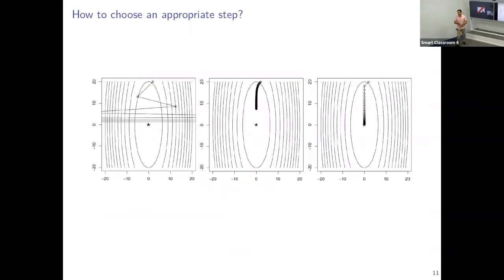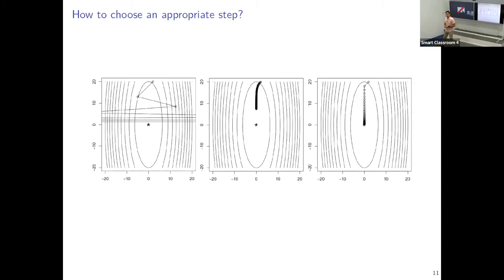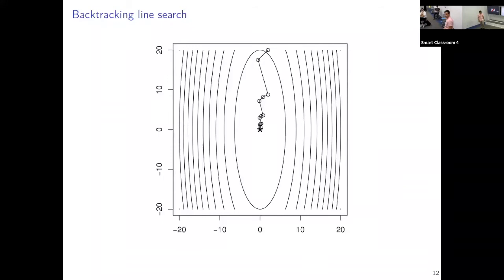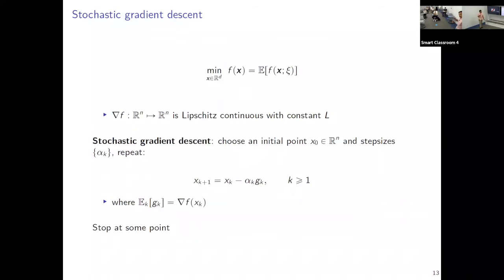The key challenge is how to choose the gradient step-size. If it's too big, the iterates might oscillate; if too small, you converge very slowly. In the deterministic setting, our tried-and-tested tool is backtracking line search, which has an inner loop to select the step-size, and we see convergence is obtained in fewer iterations than with a pre-specified step-size.